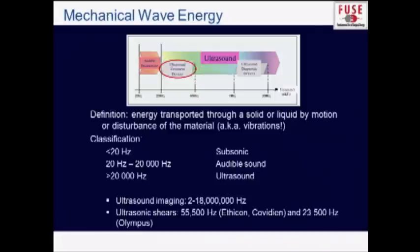If you use very high frequencies in the ultrasound spectrum — anywhere from 2 million up to 18 million hertz — that's what we use when we use ultrasound for imaging. So if you're getting an ultrasound picture of your gallbladder, you're going to be using higher frequencies like that. But if you use lower frequencies of ultrasound, roughly anywhere from 20,000 up to about 50,000 or 60,000 hertz, that's going to be the frequency range that we use in our ultrasonic devices for dissection.